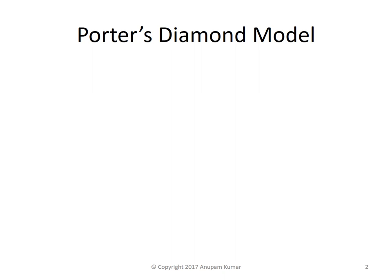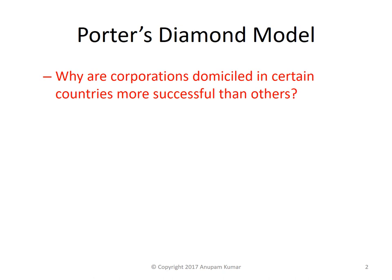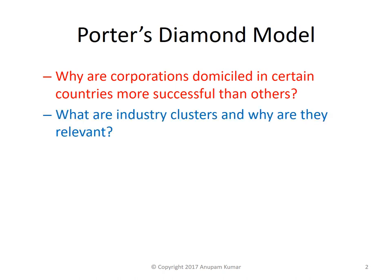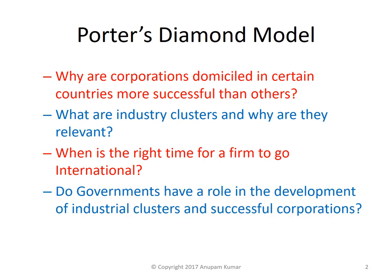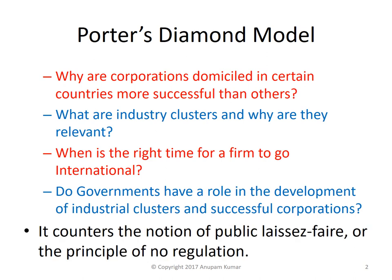Michael Porter's diamond model is one of the founding models of business management and business strategy. It tries to answer some of the most basic questions that arise within the mind of a practitioner. For example, why are corporations domiciled in certain countries more successful than others? What are industry clusters and why are they relevant? When is the right time for a firm to go international? Do governments have a role in the development of industrial clusters and successful corporations? This model basically counters the notion of laissez-faire, or the principle of no regulation by the government.